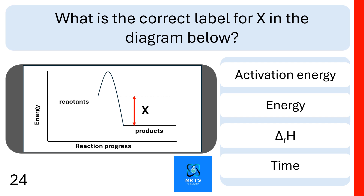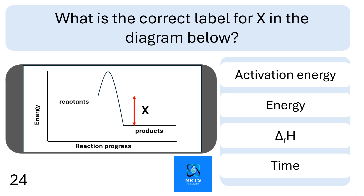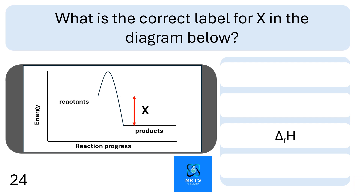What is the correct label for X here in the diagram? Is the correct label for X activation energy, energy, the enthalpy of reaction delta RH, or time? The correct label for X on this graph is delta RH, or the change in enthalpy of the reaction. Well done if you got that right.